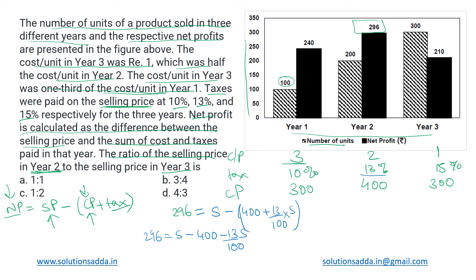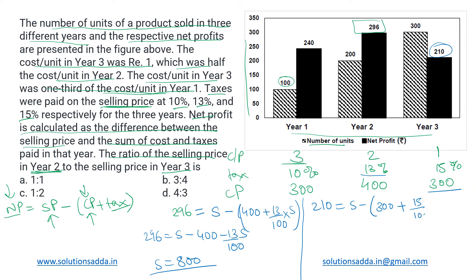Solving that equation for year two, we get the selling price S = 800 rupees. Similarly for year three, the net profit given is 210. So we write: 210 = S − 300 − (15/100) × S, where 300 is the cost price and 15% is the tax rate for year three. Solving this equation, we get S = 600 rupees.